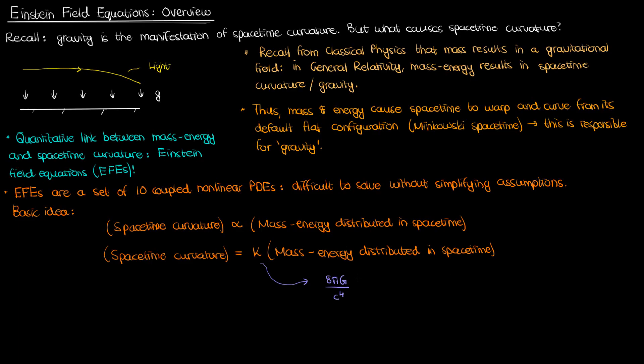You can imagine that with the universal gravitational constant G being 10 to the negative 11, and the speed of light being 3 times 10 to the 8, that this kappa is a really, really small number. This means that a tiny 1 kilogram mass will do very little in terms of causing appreciable spacetime curvature. You need a very large mass to do that.